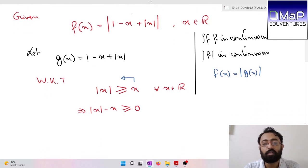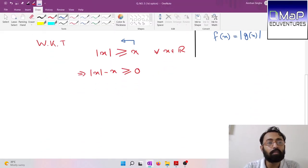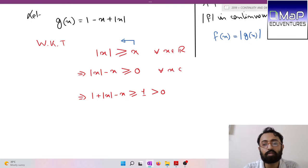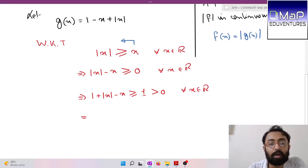Adding 1 to both sides, 1 + |x| - x will be greater than or equal to 1. Now 1 itself is greater than 0, so we get this result for all x belonging to real numbers.